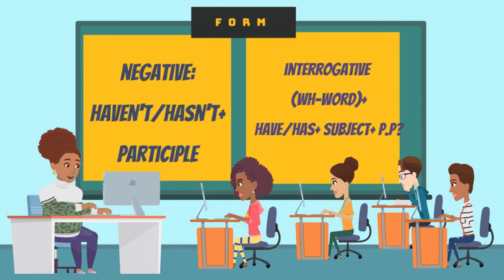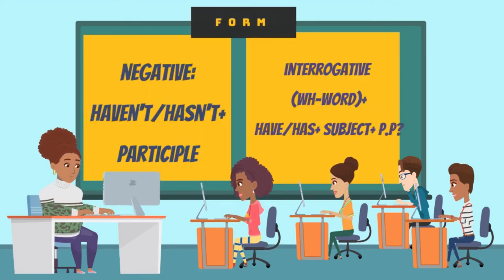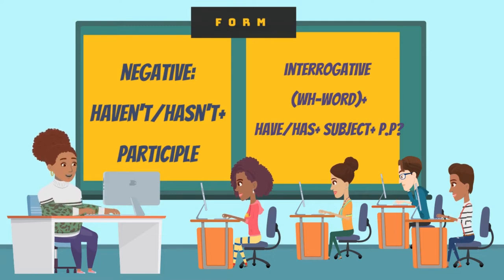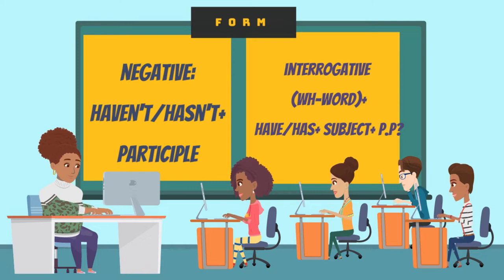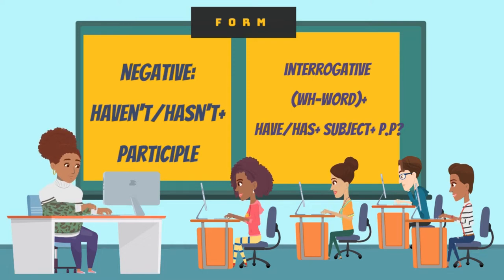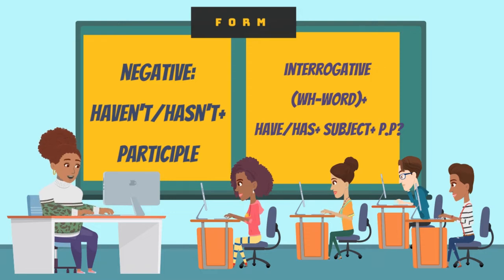As you can see, the negative sentence is formed with have not or has not — haven't and hasn't — plus the participle of the verb. The interrogative is formed with have or has before the subject of the sentence.